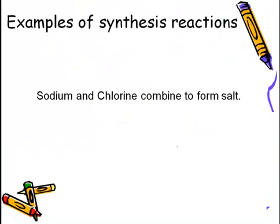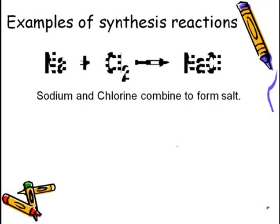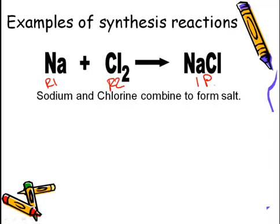Some examples of a synthesis reaction: sodium and chlorine combine to form salt. Sodium is Na, and chlorine, the diatomic molecule, is Cl2, form NaCl. Here we can see reactant 1, reactant 2 forming one product.